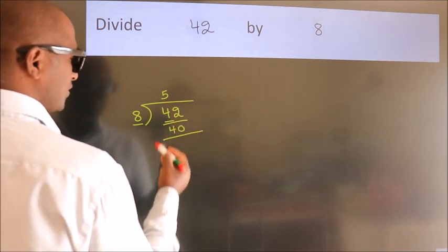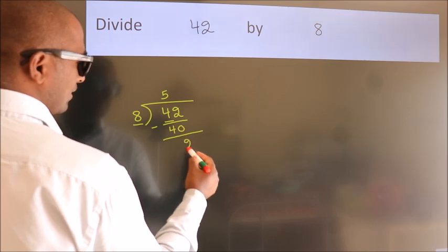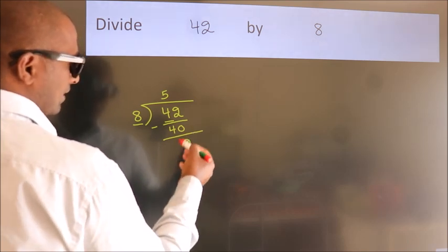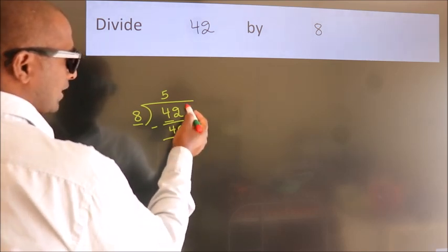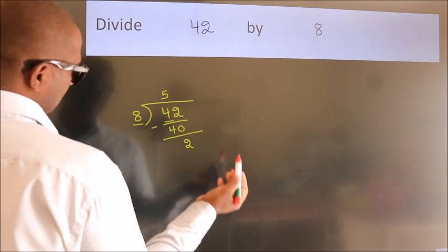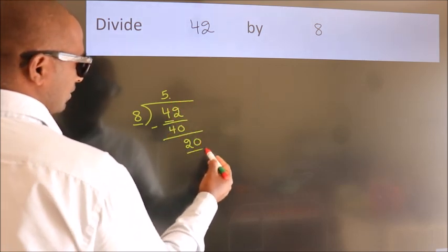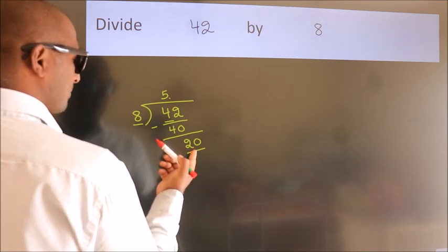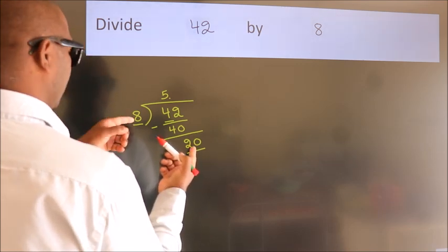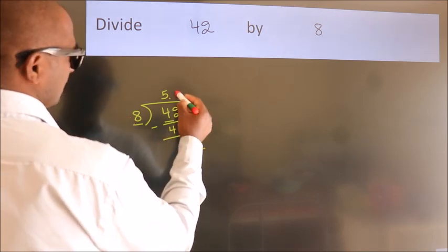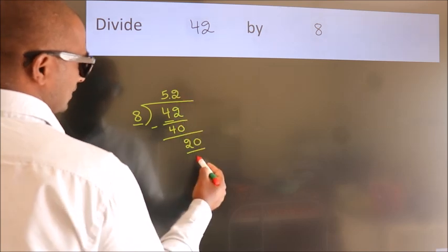Now we should subtract. We get 2. After this, no more numbers to bring down. So what we do is put a dot and take 0, making it 20. A number close to 20 in the 8 table is 8 times 2 equals 16.